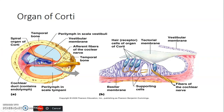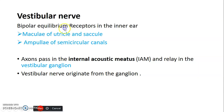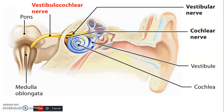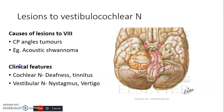The organ of Corti contains the hair cells — bipolar receptors — from which the cochlear nerve fibers form. For the vestibular nerve, the bipolar receptors are located in the inner ear: the maculae of the utricle and saccule, and the ampullae of the semicircular canals. Axons from these relay in the vestibular ganglion, from which the vestibular nerve originates. Together, the vestibular and cochlear nerves form the vestibulocochlear nerve, entering the brainstem at the cerebellopontine angle.